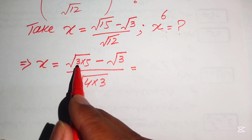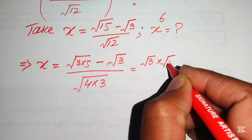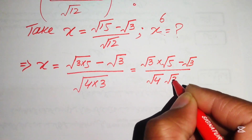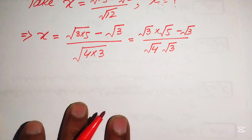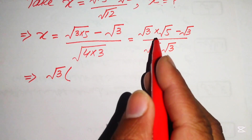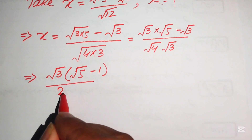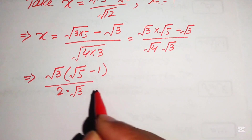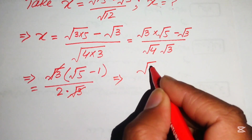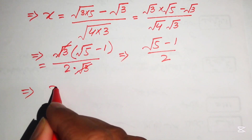Applying the radical law, this is written as square root of 3 times square root of 5, minus square root of 3, divided by square root of 4 times square root of 3. We see that square root of 3 is a common term in the numerator, so we factor it out: square root of 3 times (square root of 5 minus 1), divided by square root of 4 times square root of 3. Since square root of 4 equals 2, the square root of 3 cancels, giving x equals (square root of 5 minus 1) divided by 2.